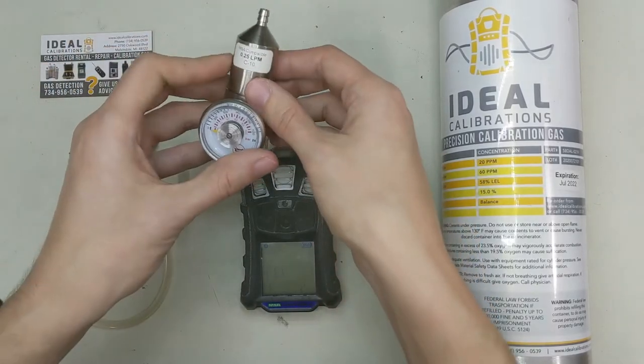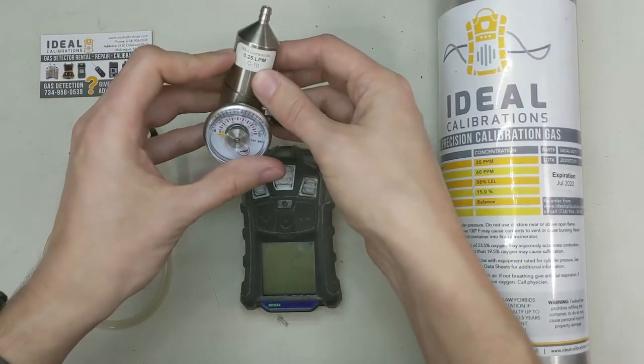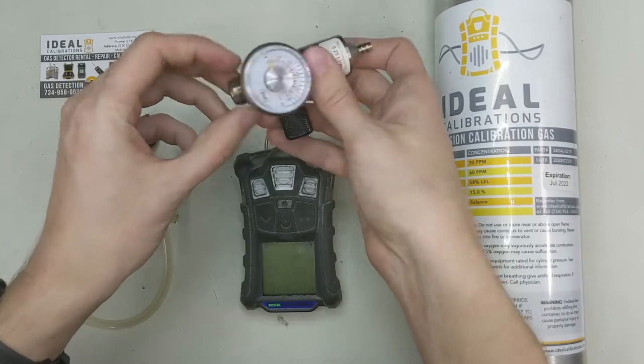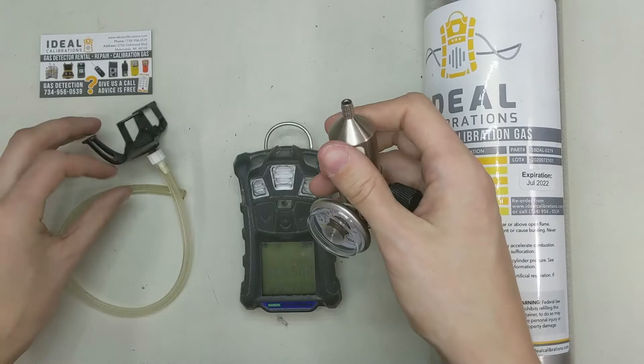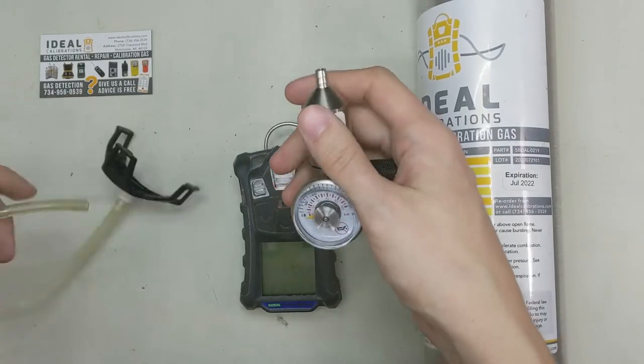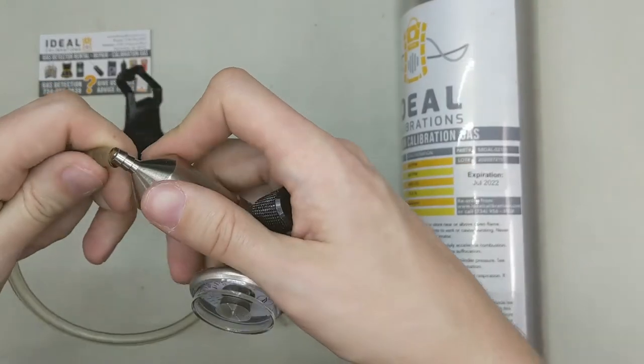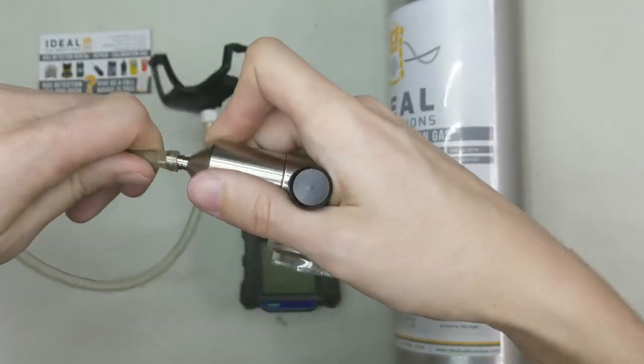In the meantime, we've got a 0.25 liter per minute regulator. It's a C10 fitting like this, and it's a fixed flow on-off. What we're going to do is we're going to take the calibration adapter you got with the monitor. And while this is starting up, going through sensor discovery, we're going to go ahead and attach this here.